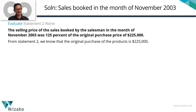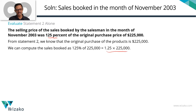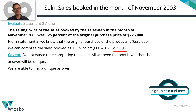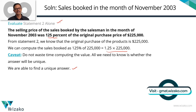Let's look at statement 2. The selling price of the sales booked by the salesman in the month of November 2003 was 125% of the original purchase price of $225,000. So, we know the cost paid is $225,000 and the selling price is 125% of the cost. The sales value is 1.25 times $225,000 — that is a unique value. So, statement 2 alone has given us a unique answer.